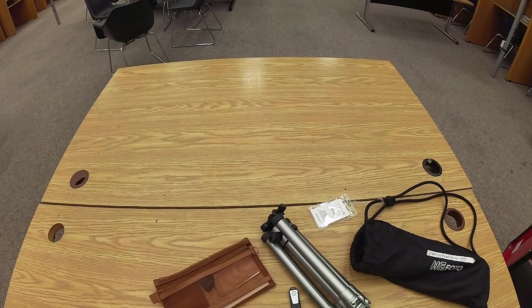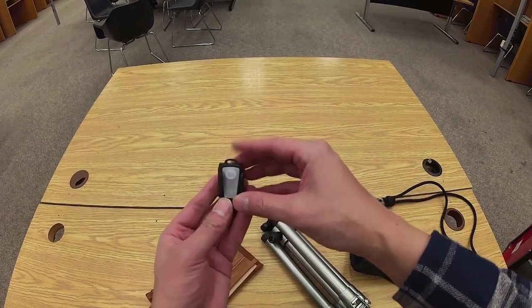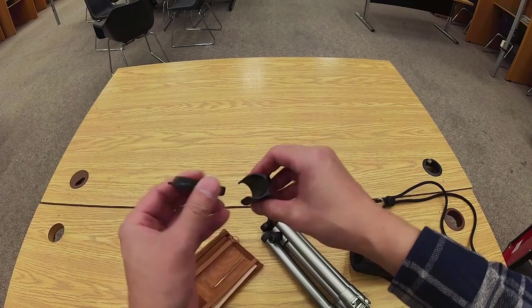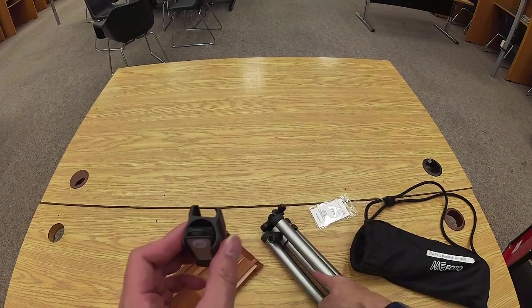This is the holder for the Bluetooth remote. So the remote goes into the holder, and then this is actually upside down, and this holder attaches to the selfie stick.